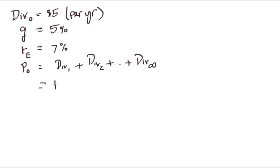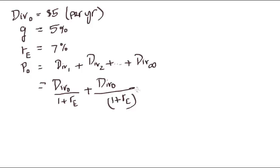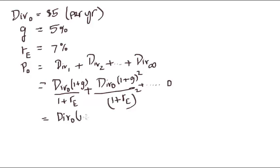Another way to express this is: assuming div1, div2, and so on all equal div0, you discount each by the equity return RE — so div0 divided by (1 + RE) for year one, div0 divided by (1 + RE) squared for year two, and so on, with the cash flow at infinity approaching zero. The additional complication is that the dividend is also growing at a growth rate G, so you multiply by (1 + G) for year one, (1 + G) squared for year two, and so forth.